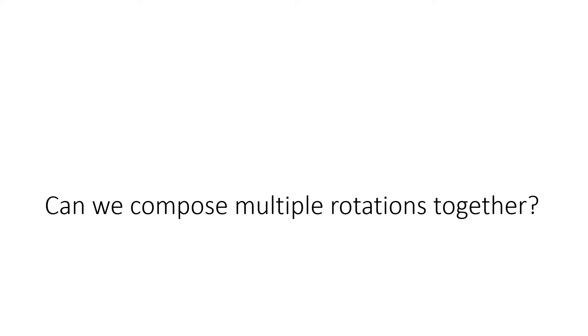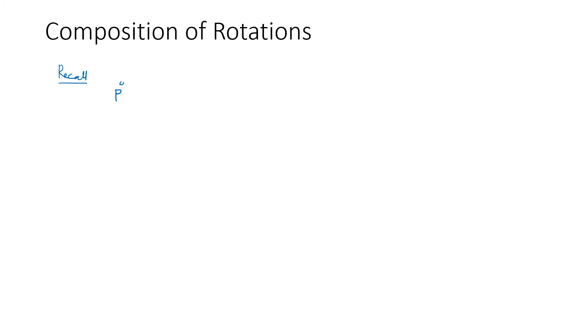What we are going to do today is further explore rotations. We will try to answer this question: can we compose multiple rotations together and find one resultant rotation that accounts for multiple rotations? Remember, we observed that the position of point P in the fixed frame equals the rotation of frame 1 with respect to frame 0 times the location of P in the body-attached frame — this is the rotation-only case, without translation yet.